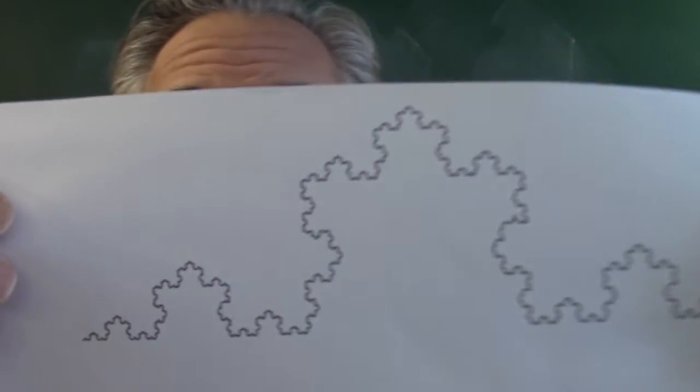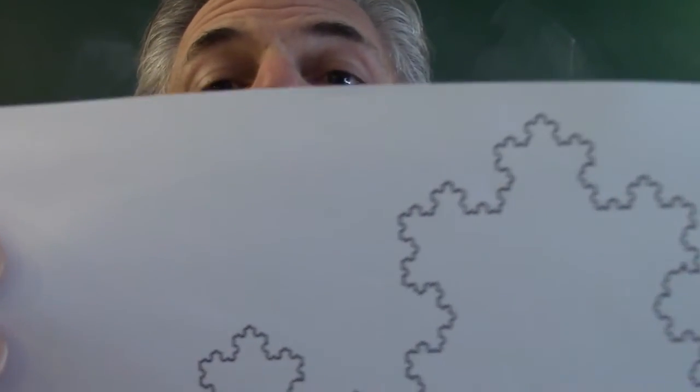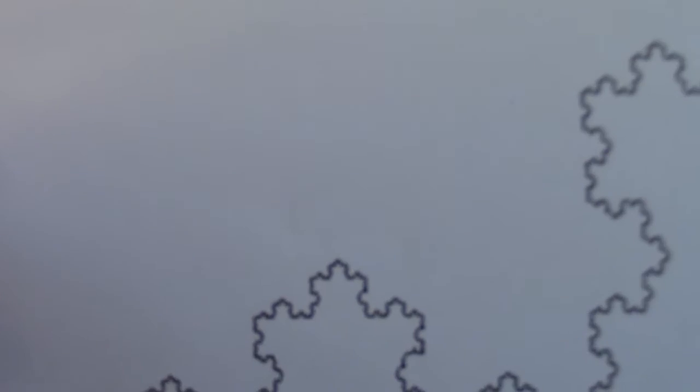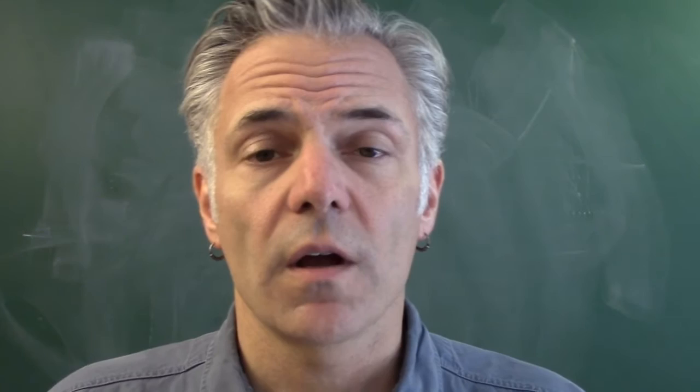As you keep zooming in on the Koch curve — if this had infinite resolution and you could focus in — you would keep seeing that same shape repeating again and again. Fractals, objects that are self-similar, are often said to be scale-free. They don't have a sense of length or typical scale or size associated with them.